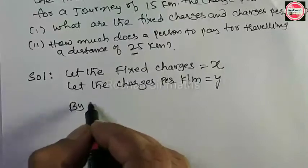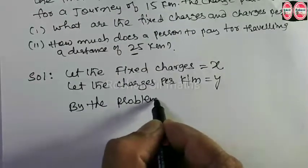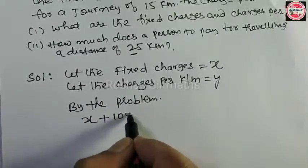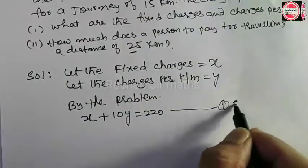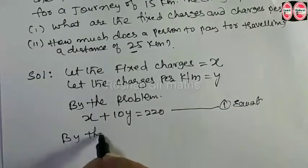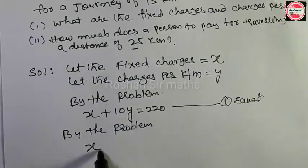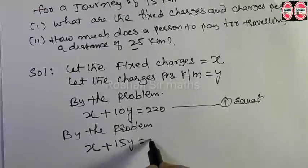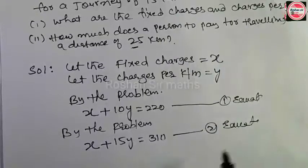Ab by the problem iske hisaab se. Fixed charges x hain, lekin 10 km hone par 220 rupees charge kar raha hai. Yeh ho gaya first equation: x + 10y = 220. By the problem, second equation: fixed charges x, aur 15 km ke liye 310 rupees charge kar raha. Yeh ho gaya equation 2: x + 15y = 310.